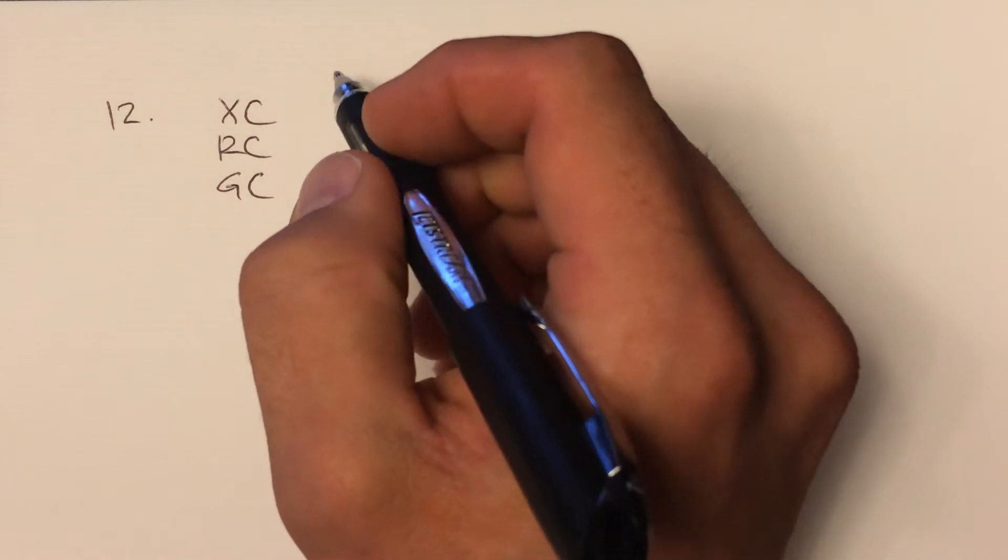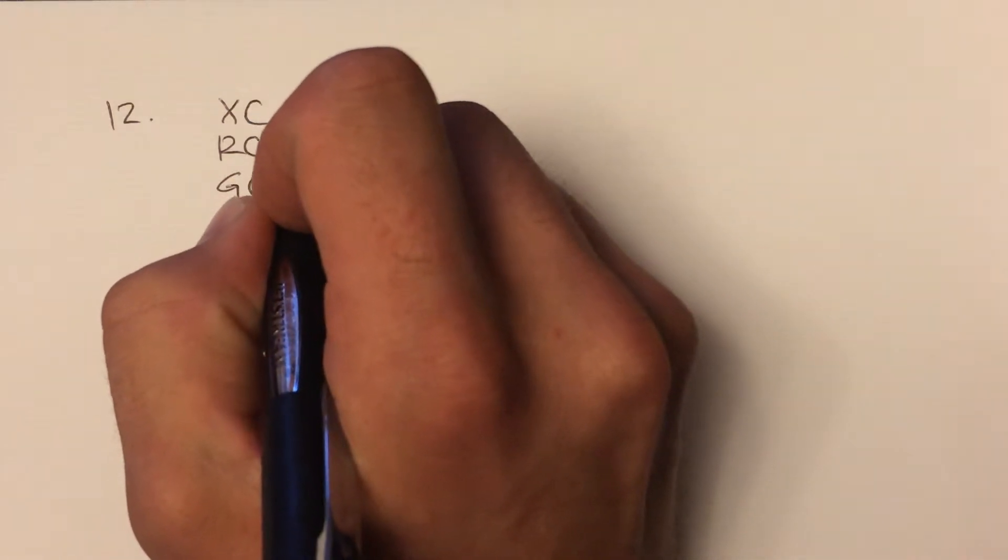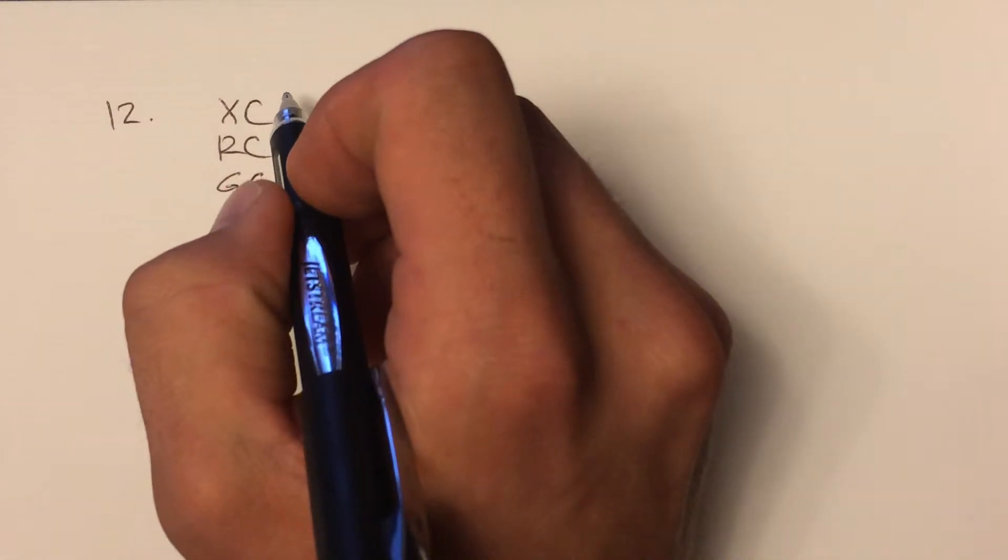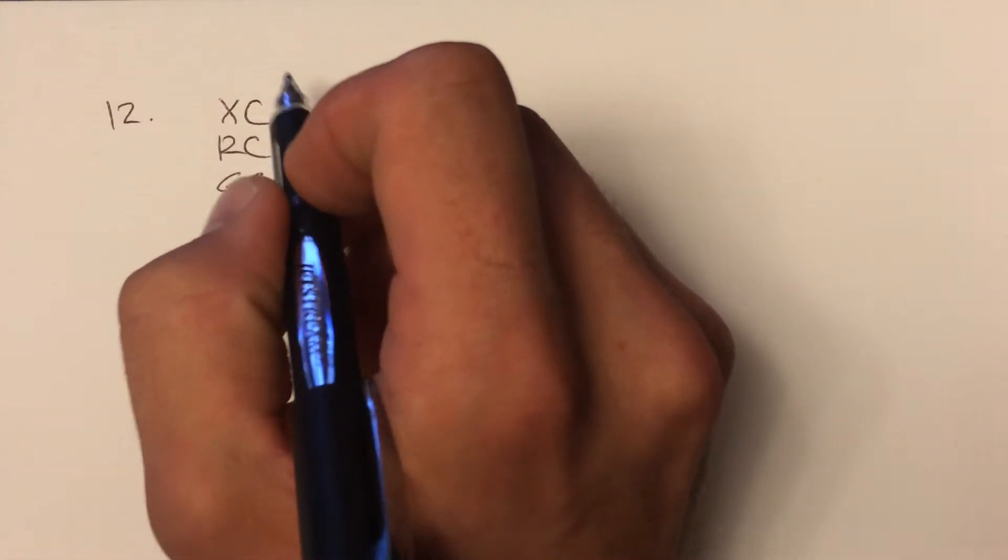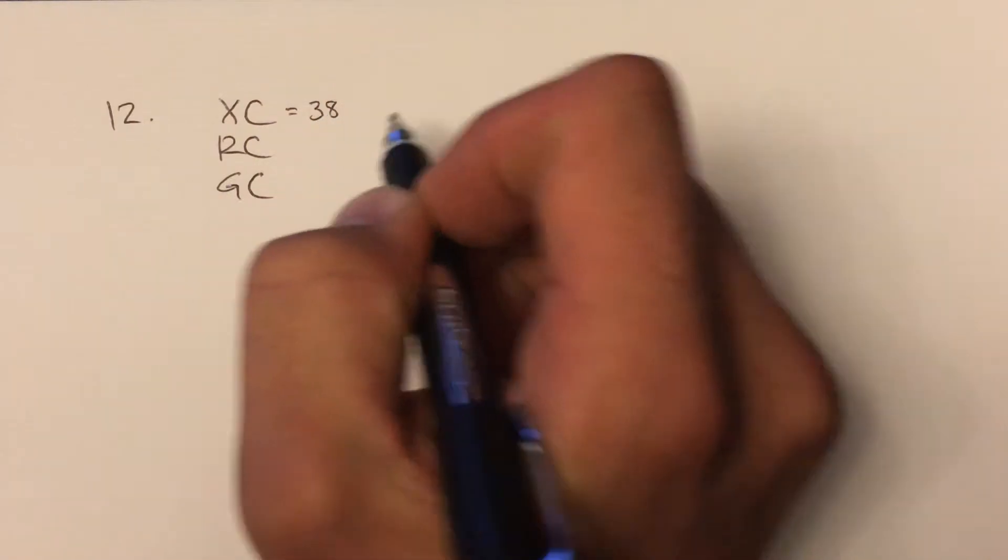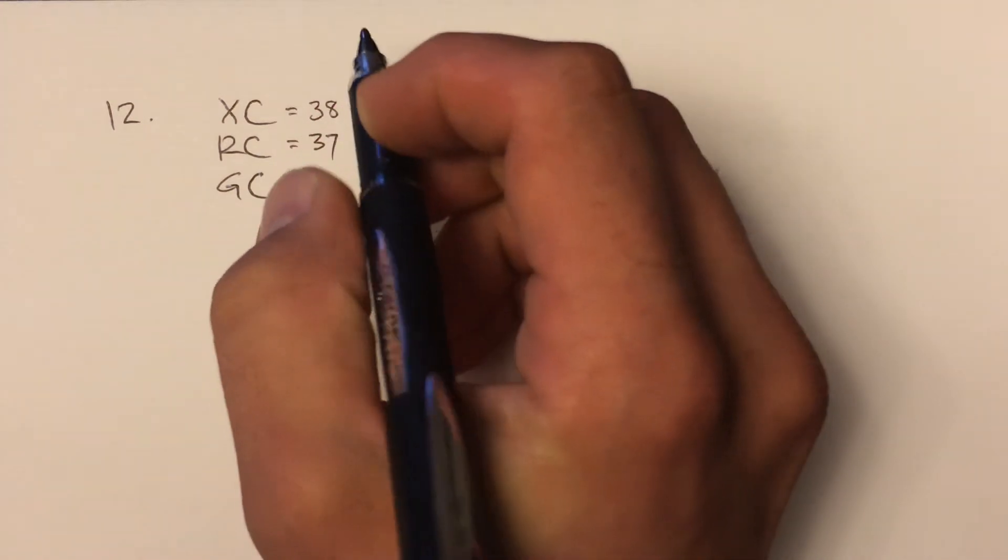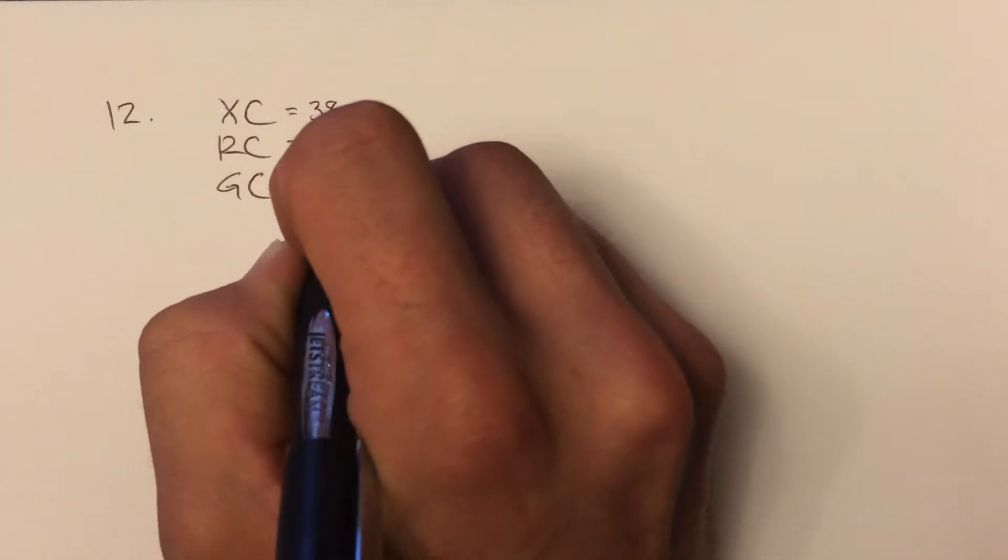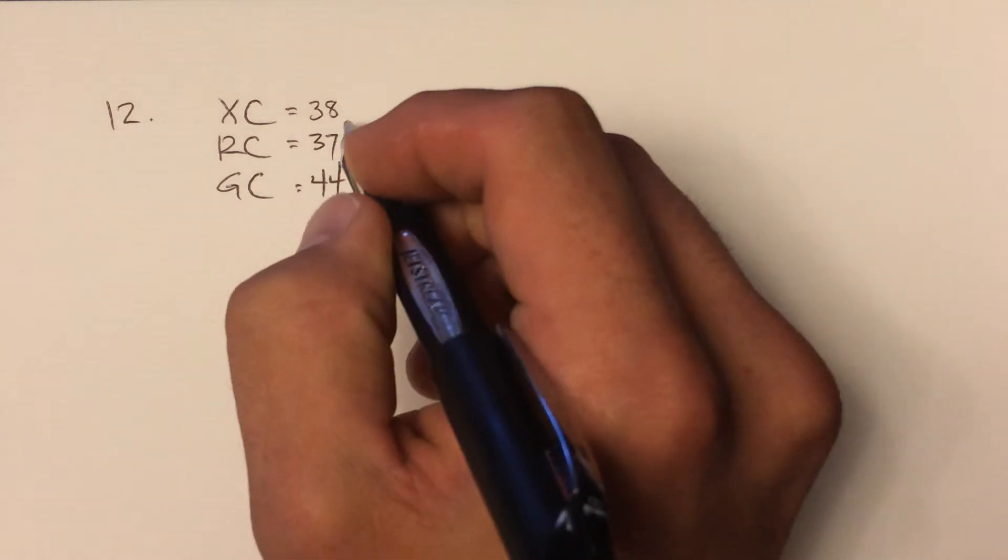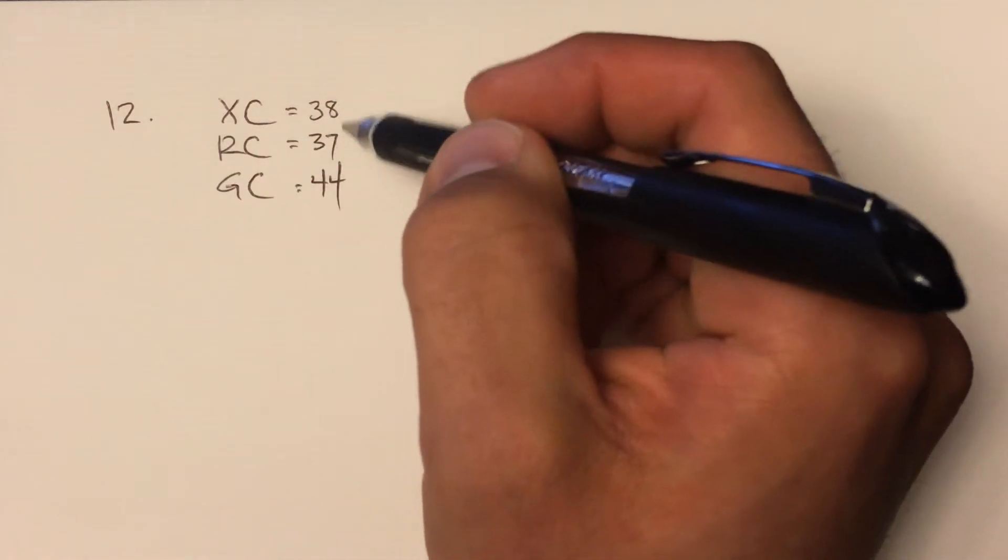And we know a bunch of information, and I'm going to put it into a diagram in just a second, except for one thing I'm not going to write in the diagram just yet. We do know that the total number of students participating in cross-country is 38, in the robotics club is 37, and in the guitar club is 44. So these are the total number of students taking these things, but there will be overlap. These are not all unique students.